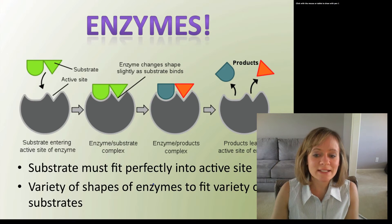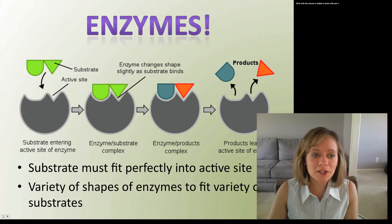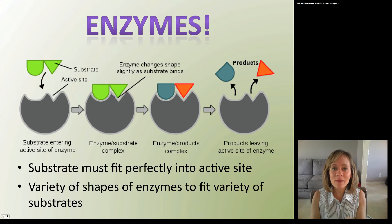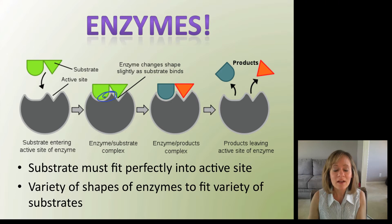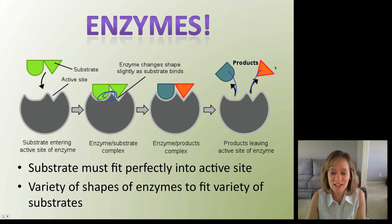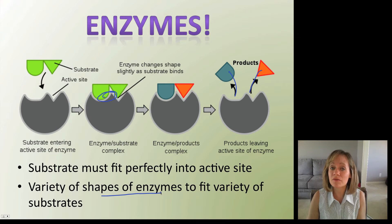Here's how enzymes work: the substrate must fit perfectly into the enzyme, forming the enzyme-substrate complex - they are cooperating. There's bond breaking happening as the enzyme twists and conforms the substrate, and then it turns it into products. In this case, two products come out and leave the active site. There are a variety of enzyme shapes in order to fit a variety of substrates within a living system.